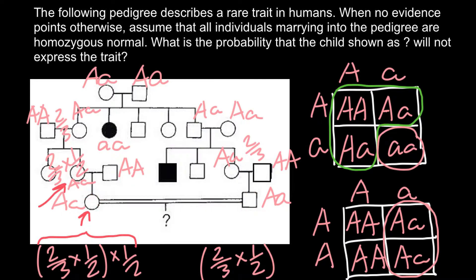If both parents are heterozygous, the probability for them to have an affected child would be one quarter. This child is not born yet, so any of these variants are possible. The probability for the child to be affected is one out of four. That means we multiply together: the probability that parent one (female) is heterozygous, the probability that parent two (male) is heterozygous, and one quarter for both heterozygous parents to have an affected child.